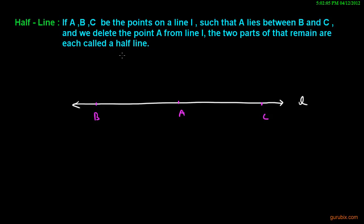And we delete the point A from line L, then the two parts that remain are each called a half line. Suppose we delete this point A, so this part of the line and this part are called half line.